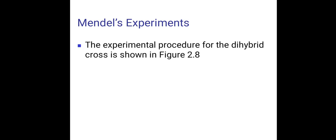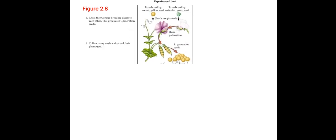The experimental procedure for this dihybrid cross is shown in figure 2.8 in which Mendel cross-pollinated these two true breeding plants to each other.